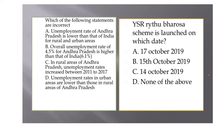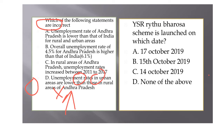This question asks which of the following statements is incorrect. The answer is D: unemployment rates in urban areas of Andhra Pradesh are actually higher than in rural areas. This statement has been directly lifted from the socio-economic survey. The other three options are correct: the overall employment rate for AP is higher than India's national rate; rural unemployment in AP increased from 2011 to 2017; and unemployment in AP is lower than India's combined rural and urban average.